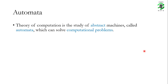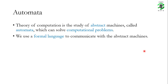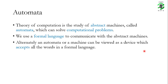In this course we will be studying automata. Theory of computation is the study of abstract machines which are called automata, which can solve computational problems. We use a formal language to communicate with the abstract machines. Ultimately, an automaton or a machine can be viewed as a device which accepts all the words in a formal language, just like a conceptual machine that accepts all the words in the English dictionary.